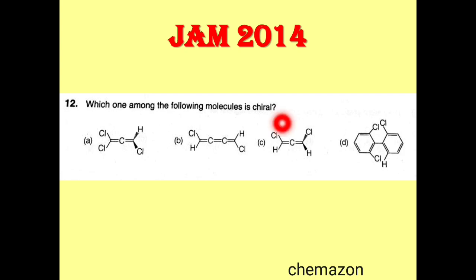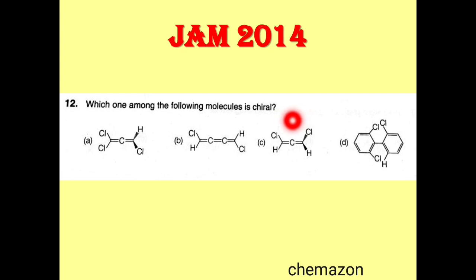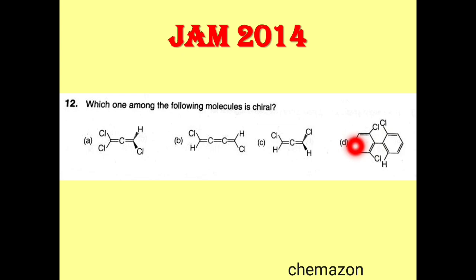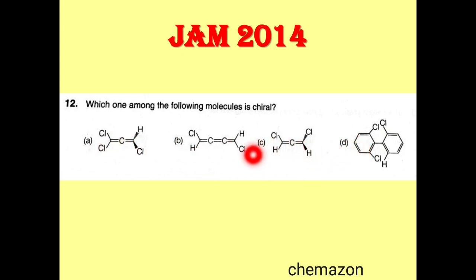Here is another question from JAM 2014 paper: Which one among the following molecules is chiral? You are given three cumulene molecules and one biphenyl molecule, and you have to identify which of these four molecules is chiral.